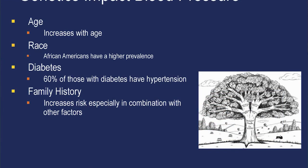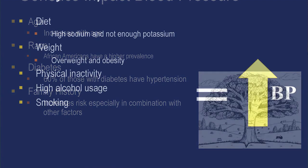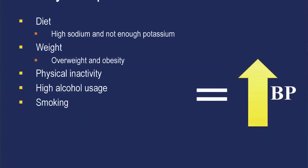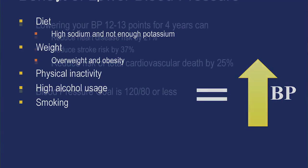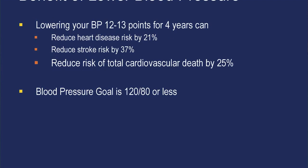Family history combined with lifestyle factors can elevate blood pressure. A diet high in sodium and not enough potassium, being overweight, physically inactive, using heavy amounts of alcohol, or smoking also increase blood pressure. There are several benefits to lowering blood pressure — lowering your blood pressure 12 to 13 points over four years can reduce your heart disease risk by 21 percent and your stroke risk by 37 percent.